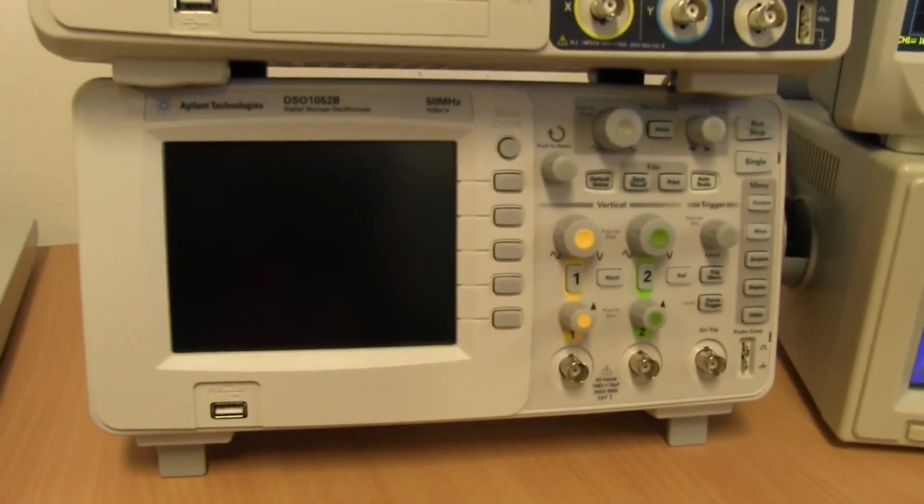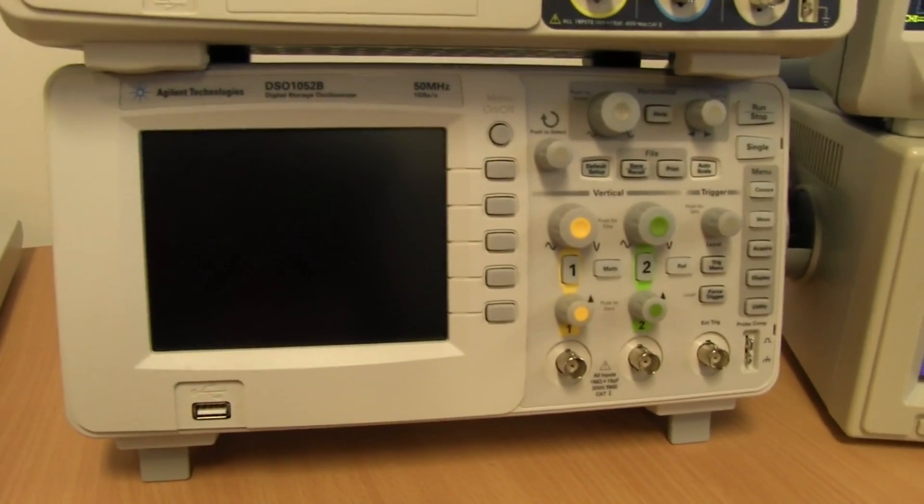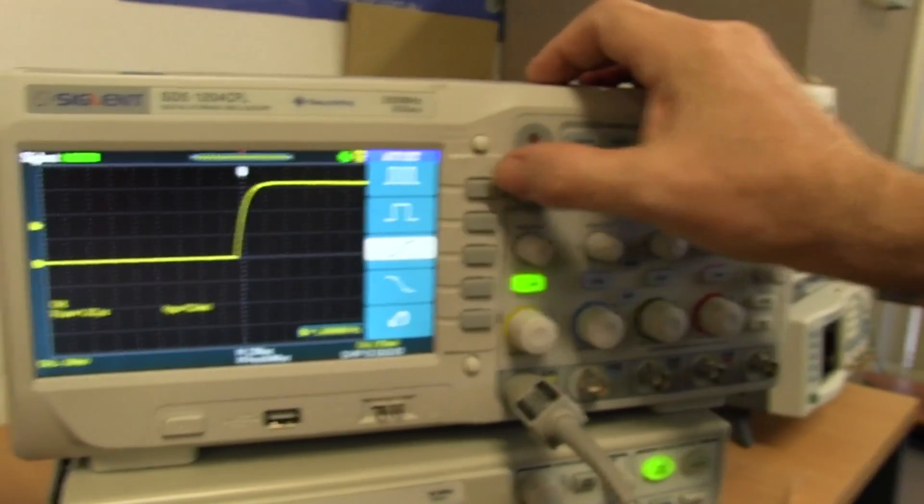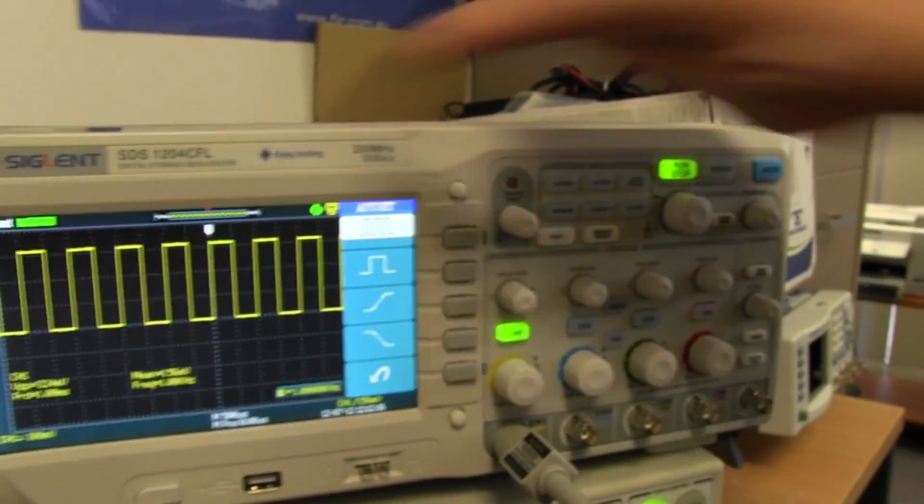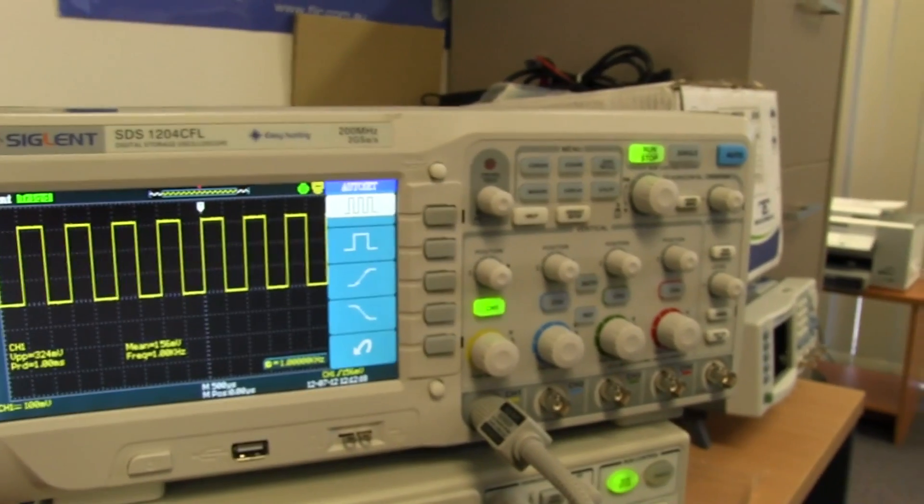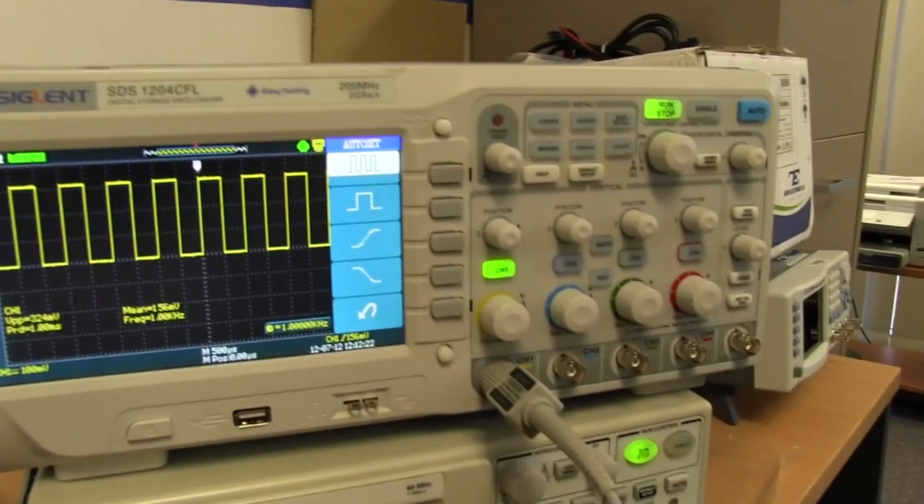and the new Rigol rebadged, sorry, the new Agilent, which is clearly a rebadged Rigol again. And we're just playing around with the new Siglent, what is it, the SDS-1204 CFL. CFL, does that mean CFL backlight? Yeah, it indicates it's a long memory, it's a C version.